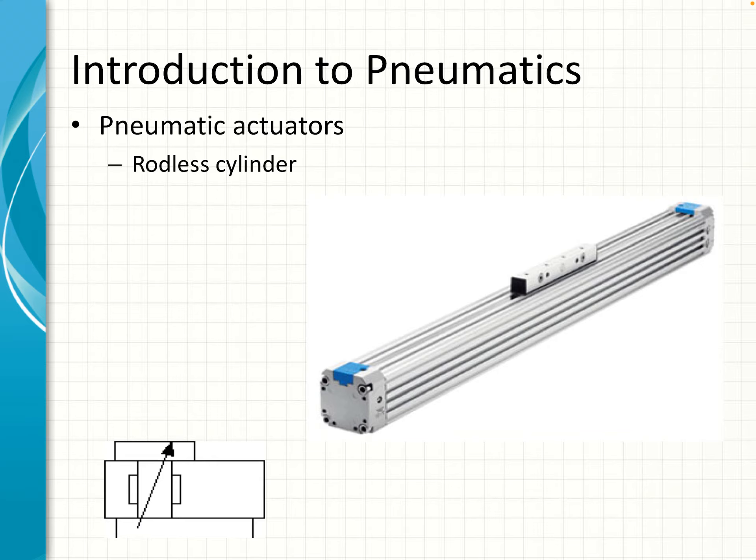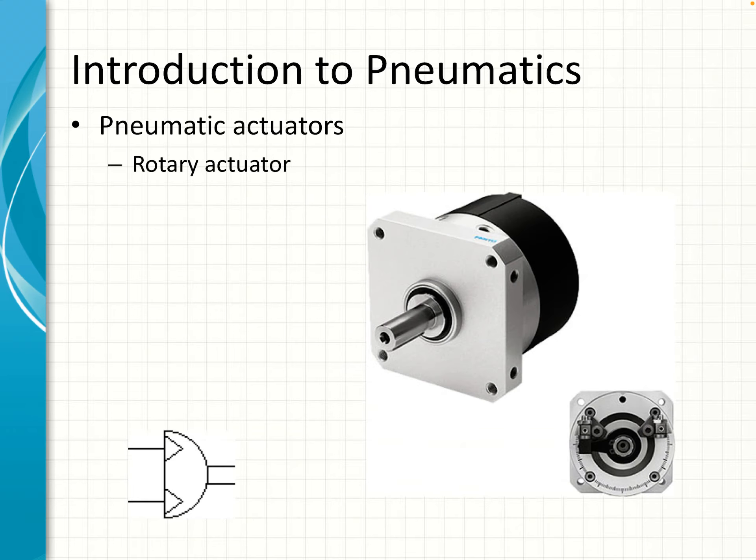Another type of cylinder is called a rodless cylinder. This doesn't have a rod sticking out — it's normally for much longer lengths where you want to move a component, and it's still double acting. Then we have rotary actuators, which is a type of cylinder that moves a shaft in a rotary direction.